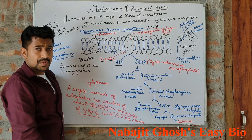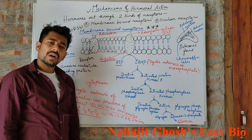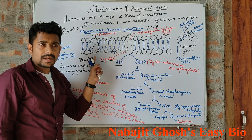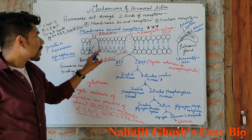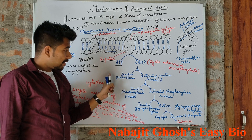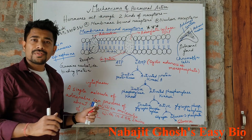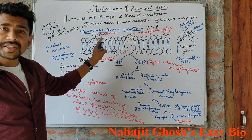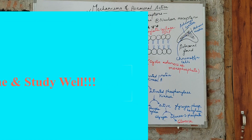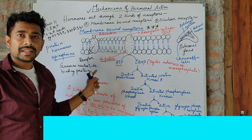Some hormones — for example, follicle stimulating hormone — also act through this kind of membrane bound receptor mechanism. This is all about membrane bound receptors. If you have any query, please write in the comment box and I will reply. Hope you all understood. In the next class, I will discuss about the nuclear receptors. If you like my video, please share and subscribe to my channel. Thank you very much.